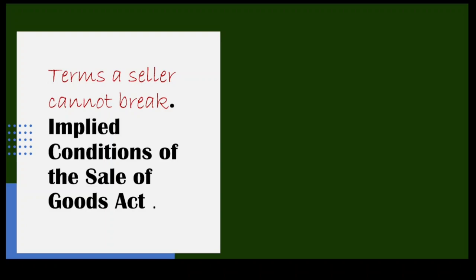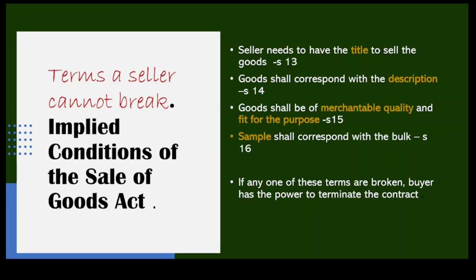Let's focus on the main element of today's lesson: terms that a seller cannot break — we call them implied conditions of the Sale of Goods Act. When you're the seller, you must have the title to sell the goods. Whatever description you give regarding the goods must be true. When you sell a good to a buyer it shall be of merchantable quality and fit for the purpose. A sample provided before a bulk sale must be as good as the bulk. If any of these terms are broken, the buyer can stop the contract, return the goods, and ask for compensation.